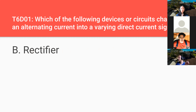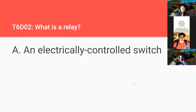Which of the following devices or circuits changes alternating current into a varying direct current signal? That is a rectifier. What is a relay? An electrically controlled switch — you use another electrical signal to control whether the switch should be opened or closed.